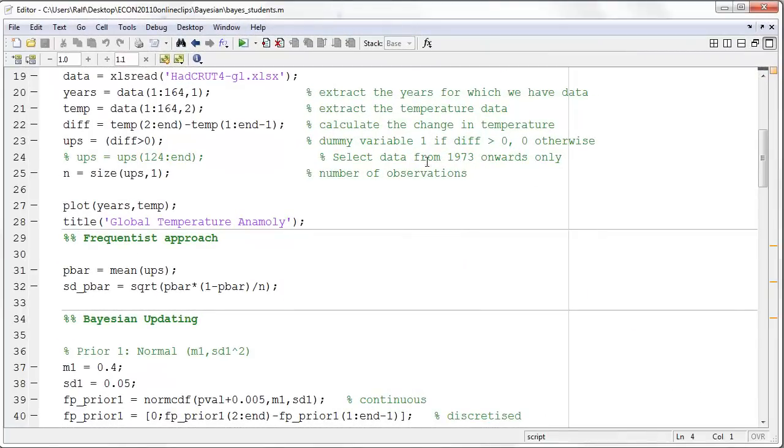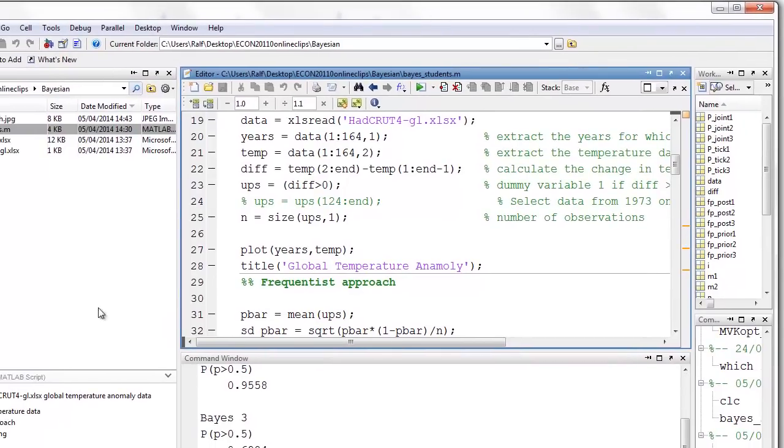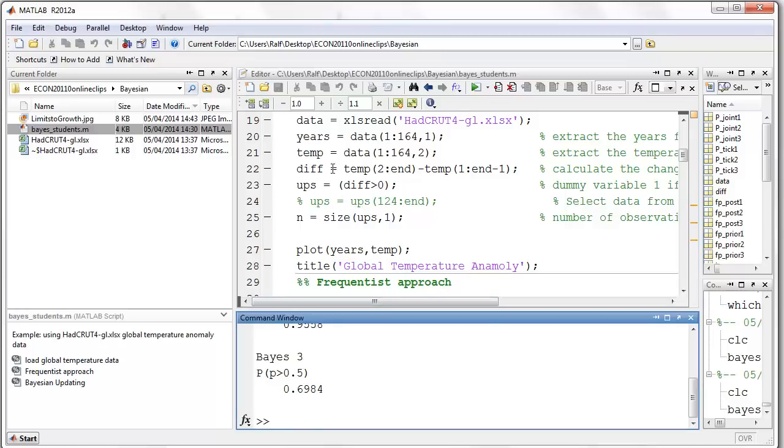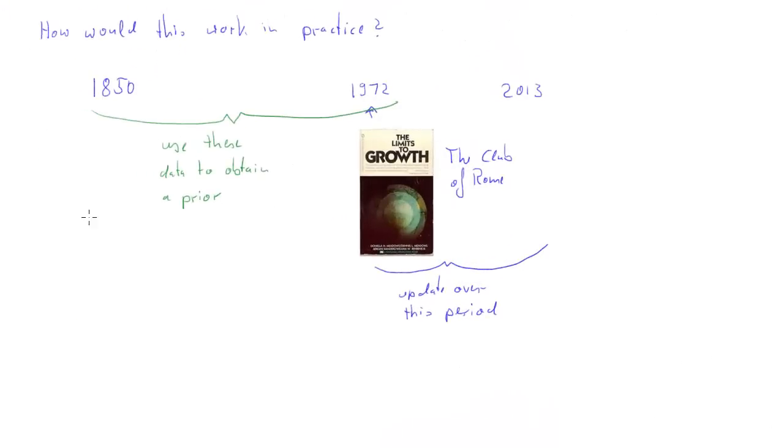So to get a prior, what I do is the following. The 124th observation is the observation in 1973. So what I'm going to do now is I'm going to calculate the mean of Yt, and therefore the proportion of increases in global temperature up to 1972. In this software which I use, you don't really need to know this, I do that by using mean ups 1 to 123. The mean of these observations is about 0.5, pretty close to 0.5. So let's use 0.5. So let's use this information to propose a prior.